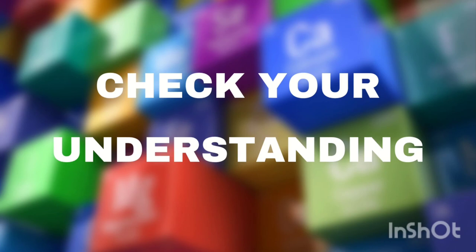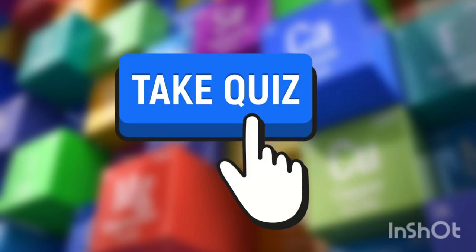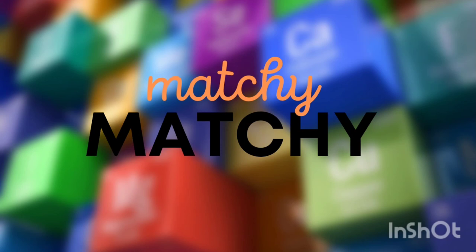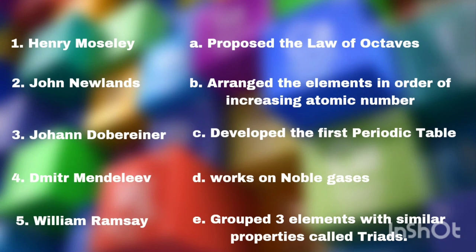Let us check your understanding. For the first part of our quiz, let us have a matching activity. Match column A with column B. On the first column, we have the names of the scientists, and on the right column, we have their contributions to the development of the periodic table. The answers will be shown at the end of this video.